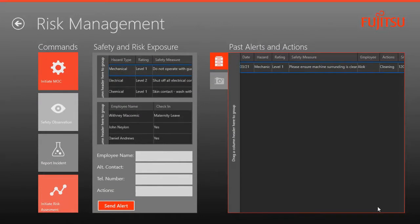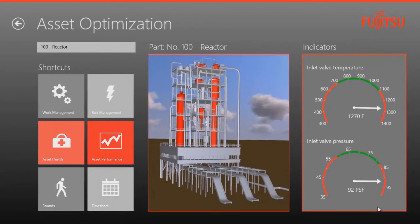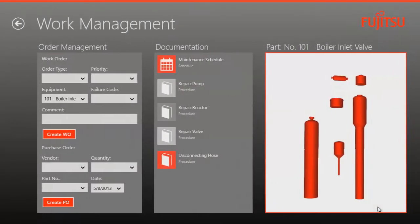Thus far, I've properly evaluated the asset's health, performance, and risk related to both the plant in general and the technicians applying the fix. Now it's time to take action. By clicking on work management, my shift supervisor can produce work orders on the fly.